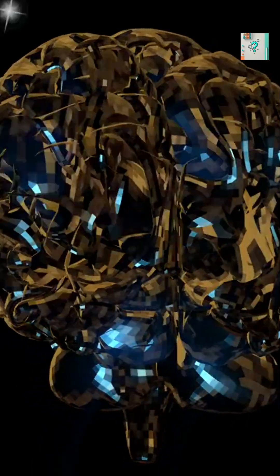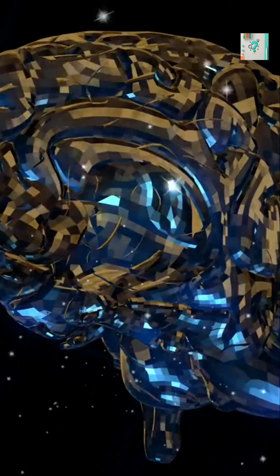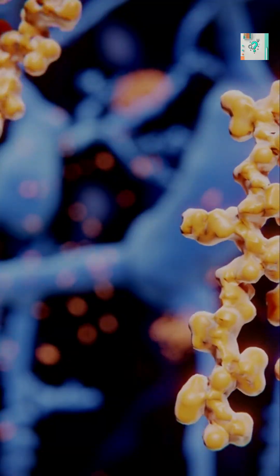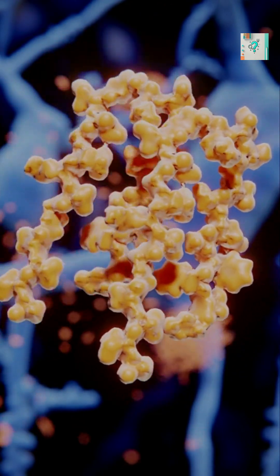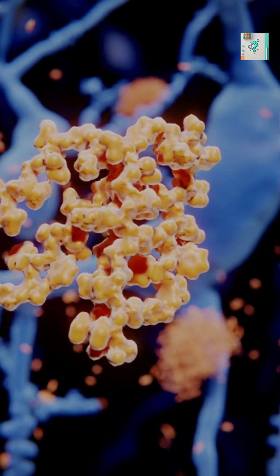Scientists call this system the glymphatic system, a kind of nighttime cleaning crew. One of the things it removes is beta amyloid, a protein linked to Alzheimer's disease.